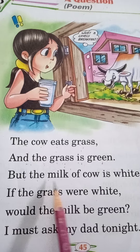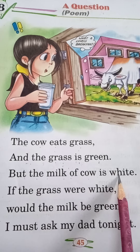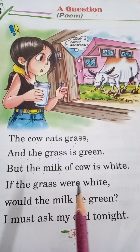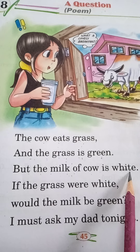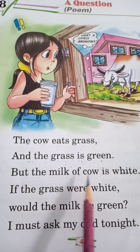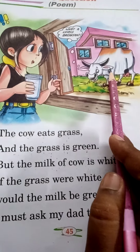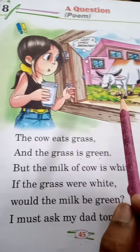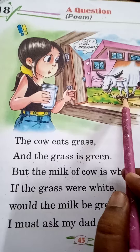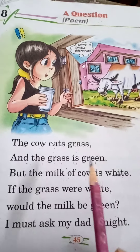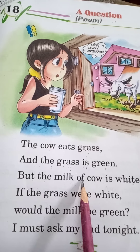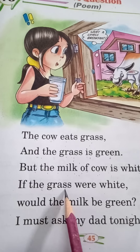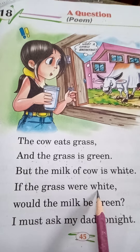Next: but the milk of cow is white. What is the color of milk? The milk is white. And who gives us milk? The cow gives us milk. So what is the color of milk? The milk is white, and we get milk from the cow.